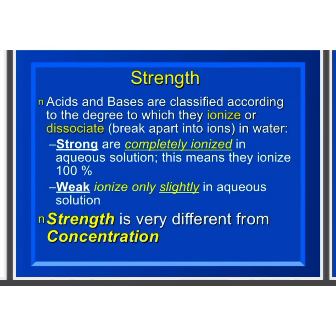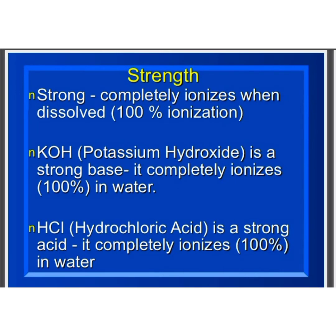Acids and bases are classified according to the degree to which they ionize or dissociate in water. Strong acids or bases are completely ionized in aqueous solution, whereas weak acids or bases are partially ionized in aqueous solution. Strength is very different from concentration — strong means completely ionized, whereas weak means partially ionized.